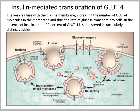When glucose transporters dock in the plasma membrane, they change their configuration, and this allows a pore to form through which glucose can go from the outside of the cell into the interior of the cell.